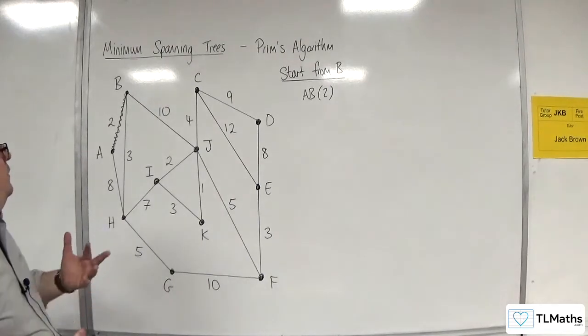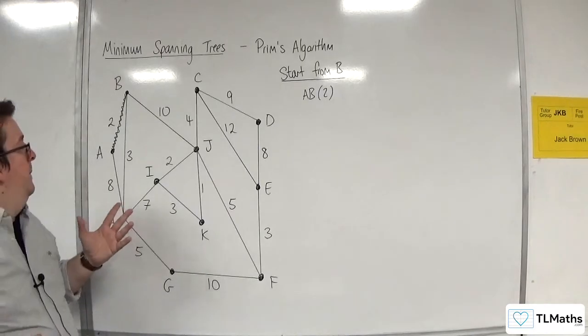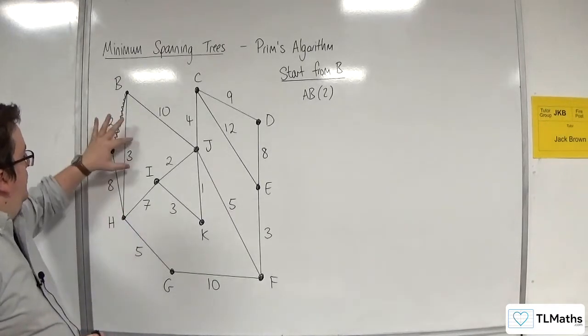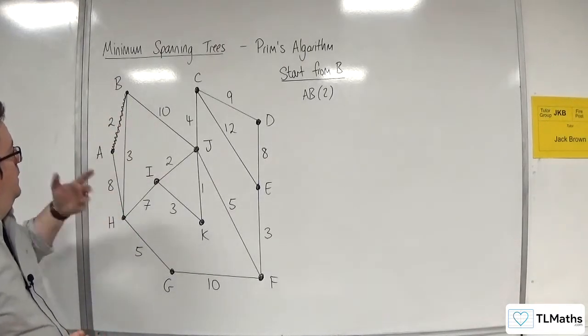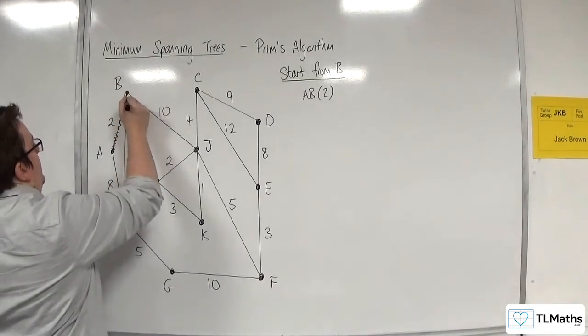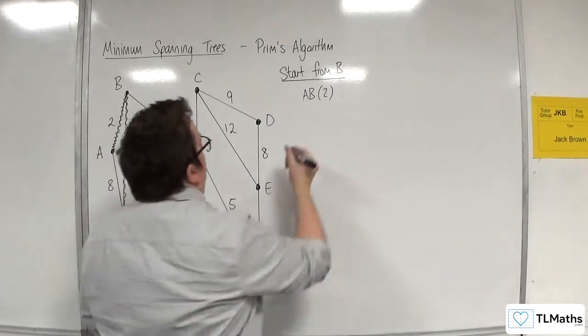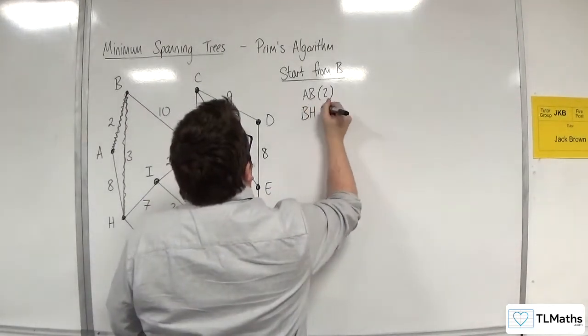Now we're looking for the shortest edge coming out of A or B. We've got 8, 3, and 10, so 3 is the shortest, so that means BH is the next edge to be picked, and that's of weight 3.